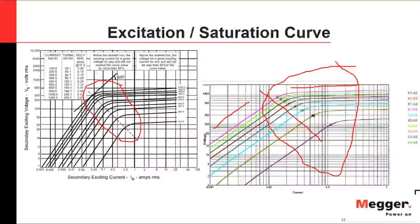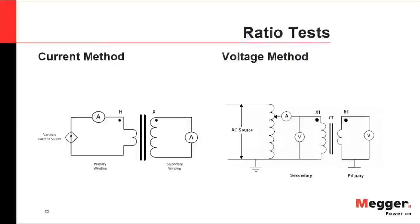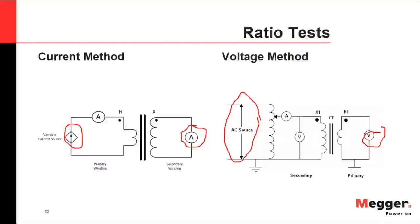For the current method, you need a variable AC current source, which may require sourcing currents up to 1000 A or 2000 A on the primary side — a significant practical challenge. An ammeter on the secondary measures the reflected current. The voltage method is simpler: you apply a sinusoidal AC voltage and measure voltage on the primary side. Since the CT secondary is low voltage, this can be done with voltages that in most cases do not exceed 300 V AC, allowing use of a small, lightweight test unit in the field.